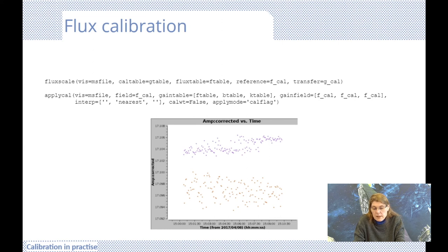The CASA fluxscale task performs the bootstrapping and calculation of the scale factor for us, which can then be applied to all sources in our observation, including the science target with an unknown flux to obtain the sky flux density.